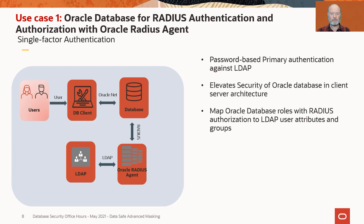The database actually gets the password, passes that off to the Radius Agent, and then the Radius Agent does a simple LDAP bind over LDAPS to the Active Directory domain controller. This means you get all the advantages of not having to configure Kerberos and make sure all your clients work with it, and you still get the integration with Active Directory without having to extend the schema. So we think this is going to be a very popular use case.